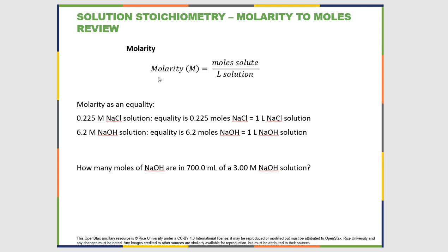Molarity is a unit of concentration and it equals moles of solute over liters of solution. Once you have the molarity, it can be used as an equality. So if we had a 0.225 molar NaCl solution, the equality is 0.225 moles of NaCl equals exactly one liter of solution. If we had a 6.2 molar NaOH solution, then we have 6.2 moles of NaOH equals one liter of solution—the molarity number of moles equals one liter, because it's moles per one liter.